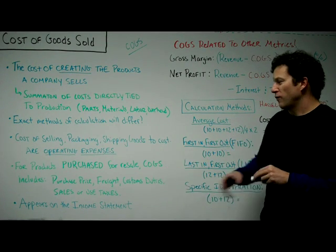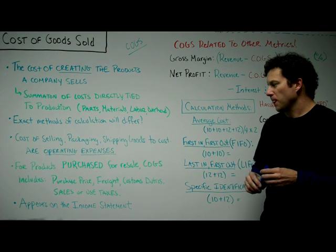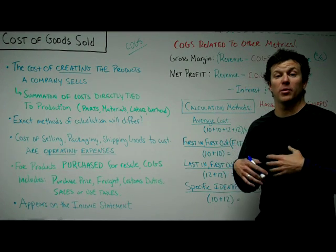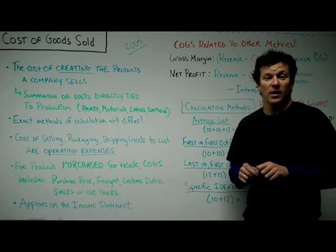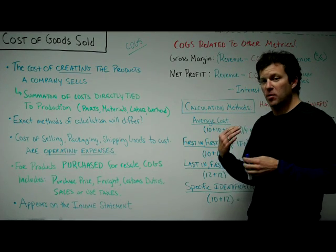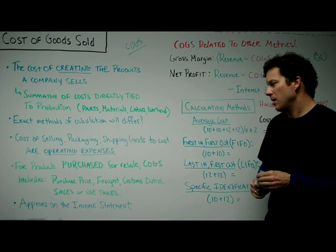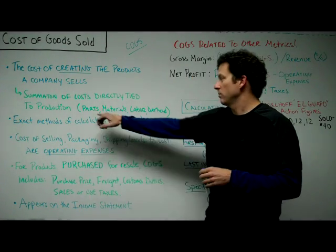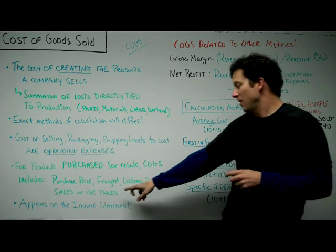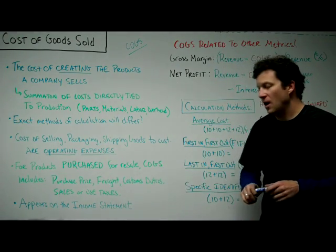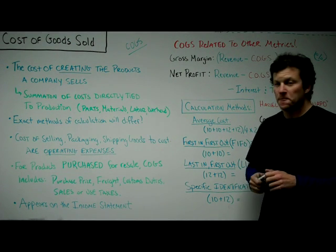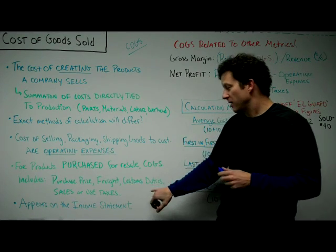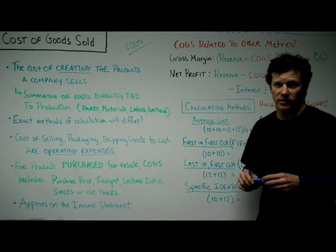It's slightly different for products that are purchased for resale. If you're purchasing a product from a factory you've contracted with, or if you're a retailer purchasing from a manufacturer to resell, it's slightly different. In this case, it includes the purchase price — which generally has all those costs baked in — and also freight, customs duties, and sales or use taxes. So if you're a company buying something from China to resell, you'll want to include freight, customs duties, and sales or use taxes when calculating COGS.